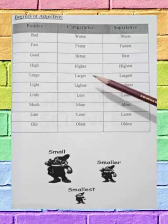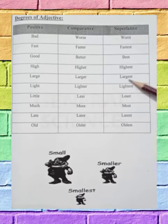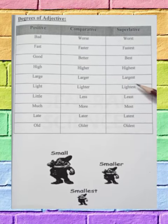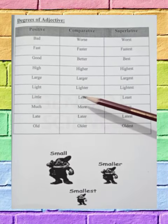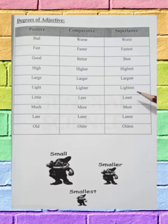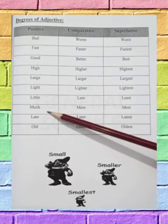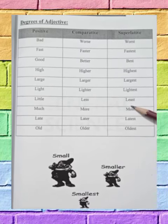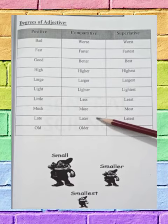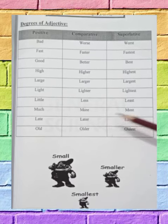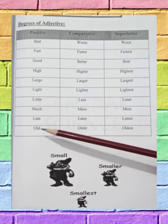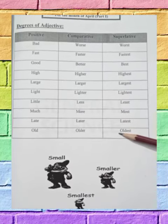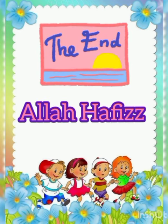Large, larger, largest. Light, lighter, lightest. Little, less, least. Much, more, most. Late, later, latest. Old, older, oldest. Hope you all understand this. Allah Hafiz.